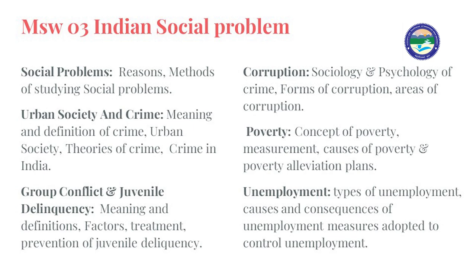The third topic is conflict and juvenile delinquency — meaning, definitions, factors, treatment, and prevention of juvenile delinquency. The fourth topic is corruption — sociological and psychological meanings, forms of corruption, and areas of corruption. The fifth topic is poverty — its concept, how to measure it, causes, and different alleviation programs by the government.